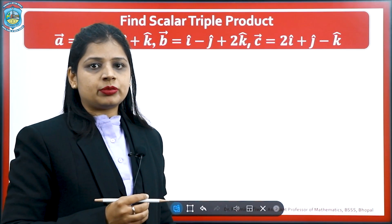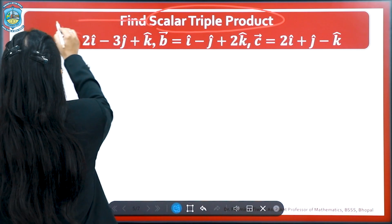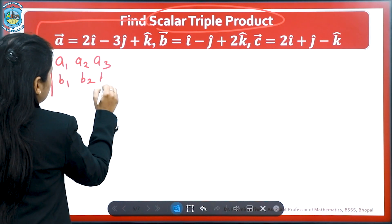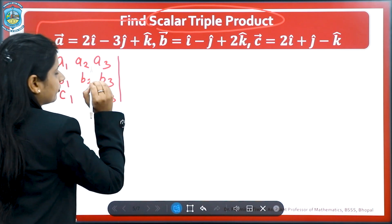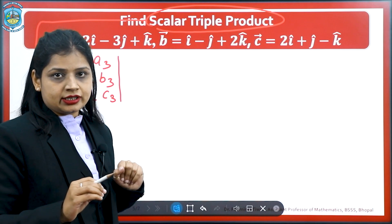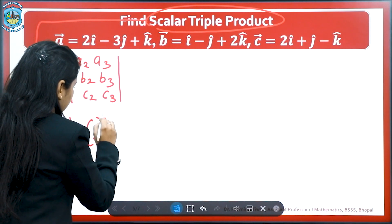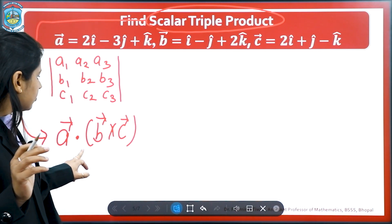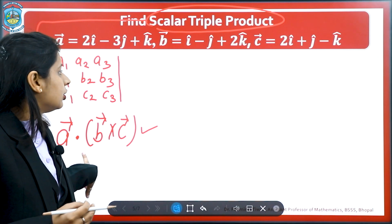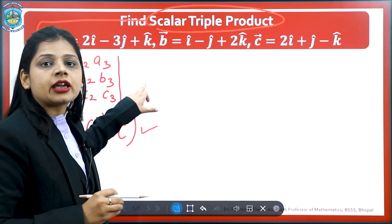Next we will solve some examples. Whenever we have to find a scalar triple product, we can solve using two methods. Either we take the determinant with rows a1, a2, a3; b1, b2, b3; c1, c2, c3, and the solution of this determinant gives the scalar triple product. The second method is to find the dot product of vector a with the cross product of b and c, which also gives the scalar triple product. You may use any one method. In this video, I will solve the same example by both methods.